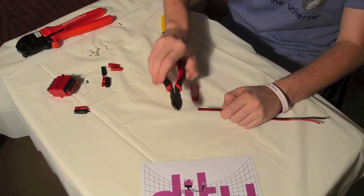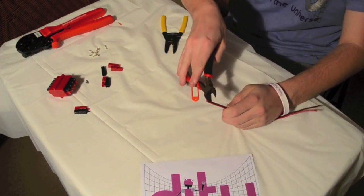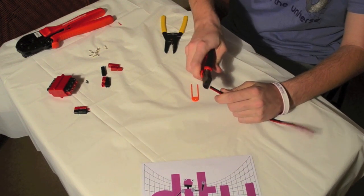To make your Anderson connectors, the first step is to remove the ends off your wires, like so.